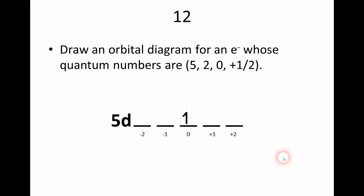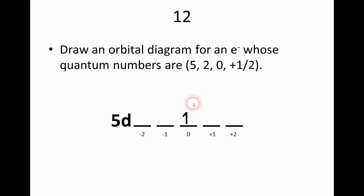Number twelve asks us to draw an orbital diagram for an electron whose quantum numbers are five, two, zero, and positive one-half. I've drawn it as 5D because N equals five and L equals two. The arrow is in the middle position because M sub L equals zero, and the arrow is pointing up because M sub S is positive one-half.